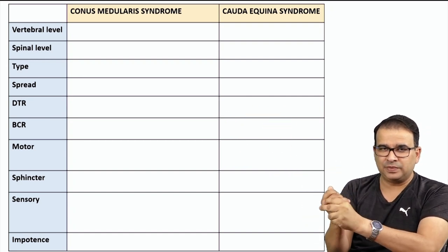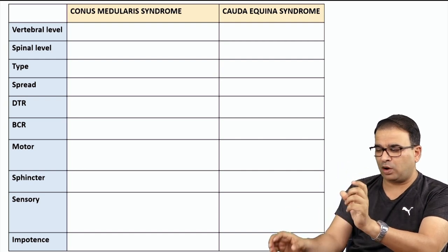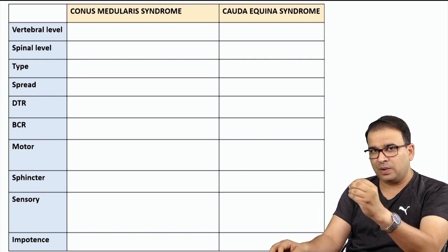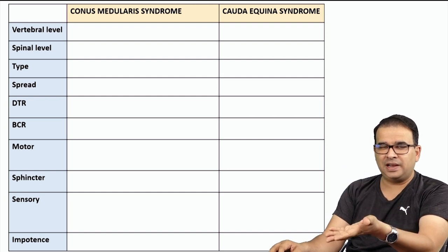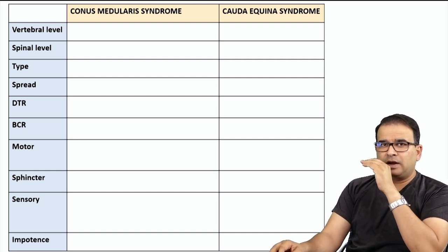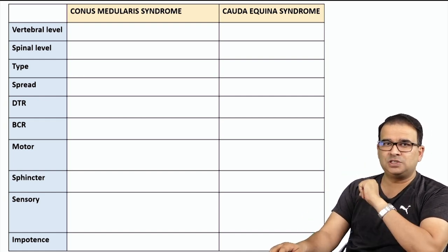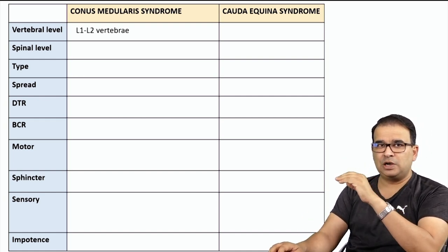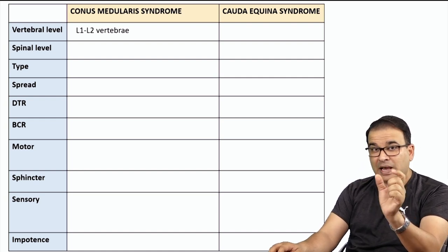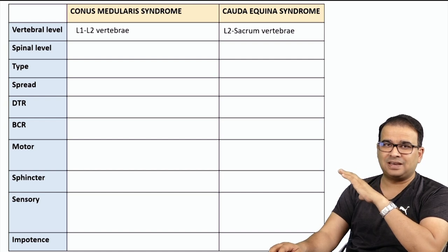Starting with vertebral level: the conus medullaris is at L1 to L2 — the spinal cord ends at the lower border of L1 or up to L2. The cauda equina extends all the way from L2 to the coccygeal or sacral region. Regarding spinal segments: conus medullaris involves precisely the sacral region along with coccygeal — S1 to coccygeal. Cauda equina involves from L2 to coccygeal nerve, so more extended nerve involvement.